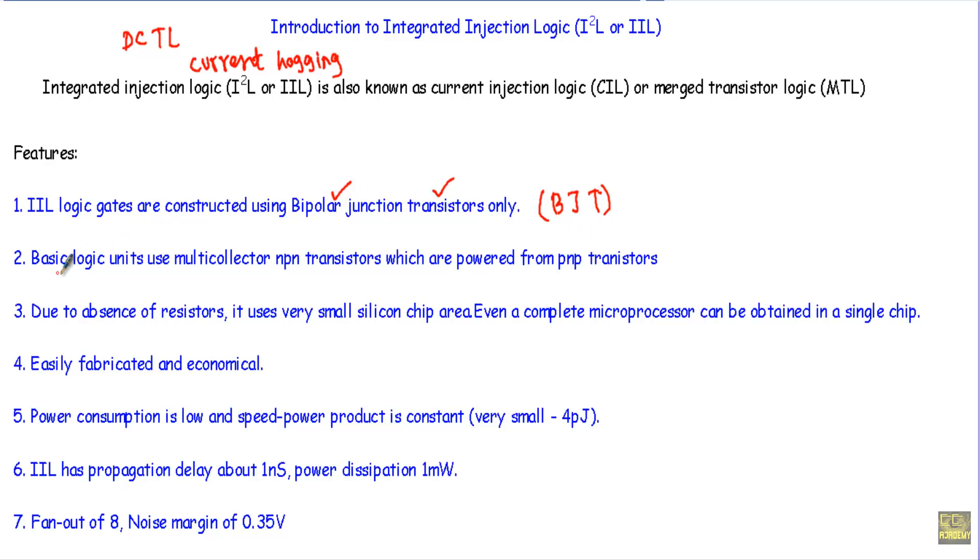Secondly, basic logic units use multi-collector NPN transistors. Our logic unit will be NPN transistors with multi-collector. That means the collector will have more than one terminal.